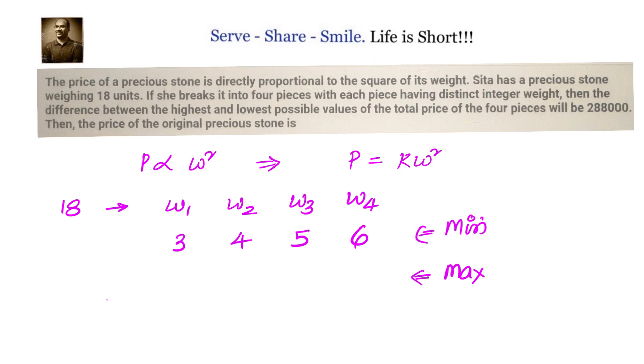And to get the maximum, we should have the maximum difference between the lowest weight and the greatest weight. So we will take it as 1, 2, 3 and then that left out is 12. So this is where we will get the maximum value for the price.